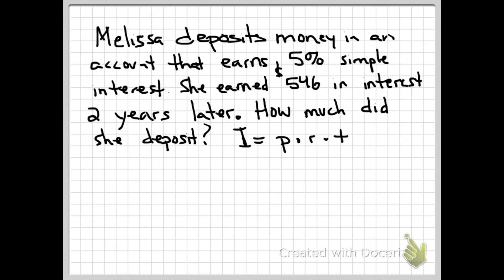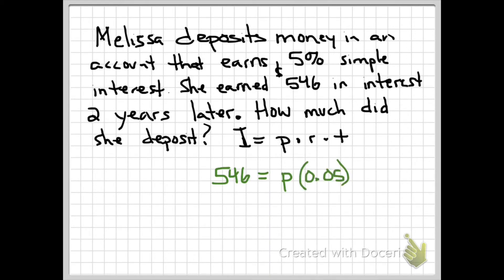Let's look at one that's a little different. Melissa deposits money in an account that earns five percent simple interest, earning $546 in interest two years later. How much did she deposit? What we're looking for here is the principal — what was initially put in. The $546 is the interest. We know the rate is five percent, which we convert to 0.05, over the course of two years.